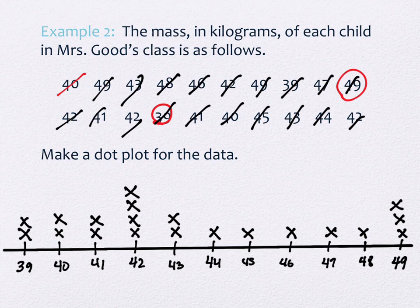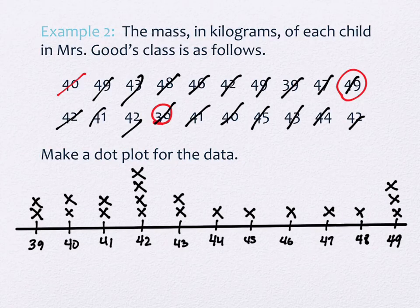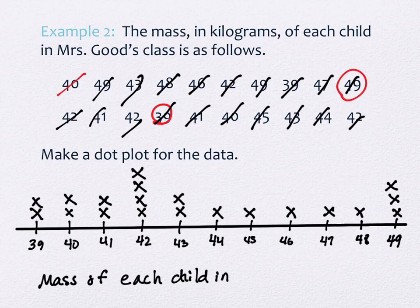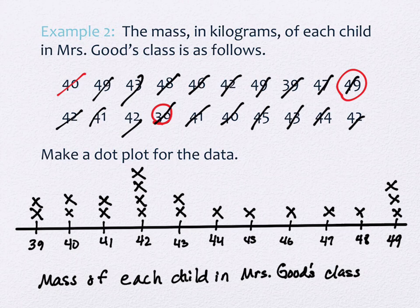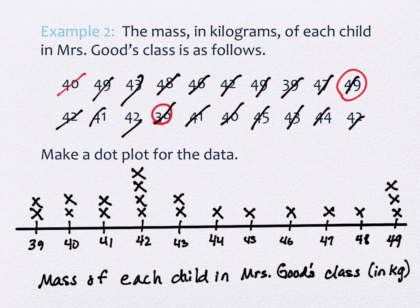What's this graph missing? A title. Every single graph needs a title — what in the world is this graph representing? Something like 'Mass of Each Child in Mrs. Good's Class.' There's also something else missing: the units. Since the measurement is given in kilograms, that needs to be represented somewhere — either in the title or as a label. If units are given in the problem, we include them.